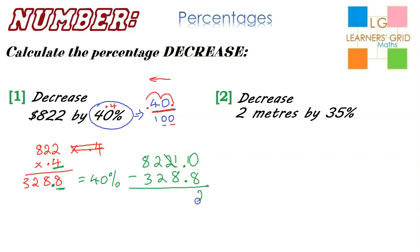So 0 minus 8, I can't do that, so I have to borrow. That turns into 1, that turns into a 10. This becomes 2. I'm up to the decimal point, so put it in. 1 minus 8, we can't do that, so we have to borrow. This becomes an 11. 11 minus 8 is 3.